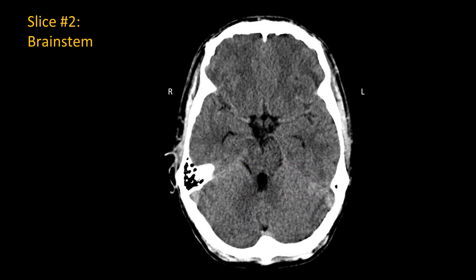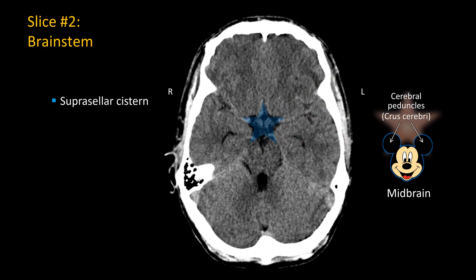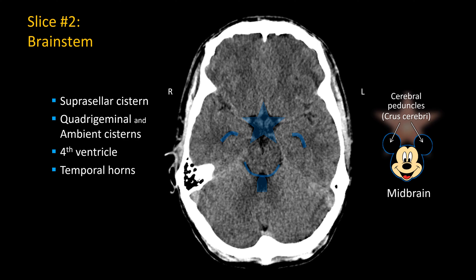One level above at the brainstem, specifically at the level of the midbrain, the midbrain on axial view looks like a Mickey Mouse, and the ear of the Mickey Mouse is the crus cerebri or cerebral peduncle. Anterior to the midbrain, you will see a very important star-shaped cistern — the suprasellar cistern — which you want to make sure is widely patent. Posterior to the midbrain, you should see the smile-shaped quadrigeminal cistern and ambient cisterns. The quadrigeminal plate cistern is the flat portion; the corners of the smile are the ambient cisterns. Make sure they are open and not compressed. To the side, in the medial portion of the temporal lobe, you should see small temporal horns — the most dependent portion of the lateral ventricle — and make sure they are symmetric and not dilated.